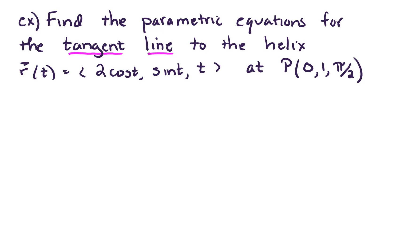Okay, so in this example I'd like to take a look at finding the parametric equations for the tangent line to the helix r of t given by 2 cosine of t, sine t, and t. And I'd really like to draw your attention to this being a tangent line. So this is not a unit tangent vector, this is a tangent line to the helix at a given point.